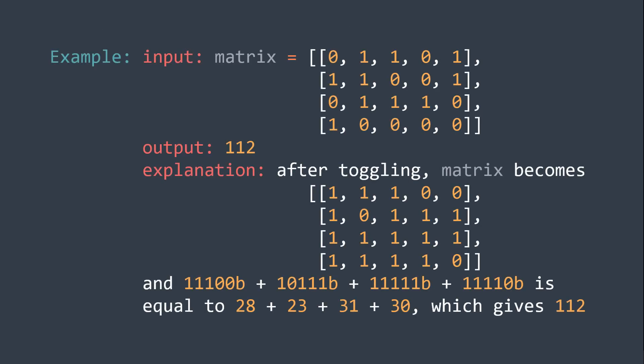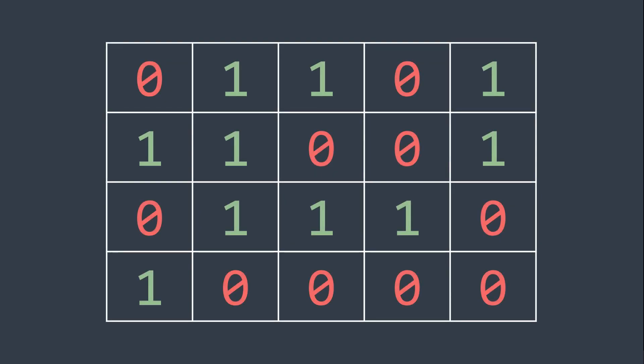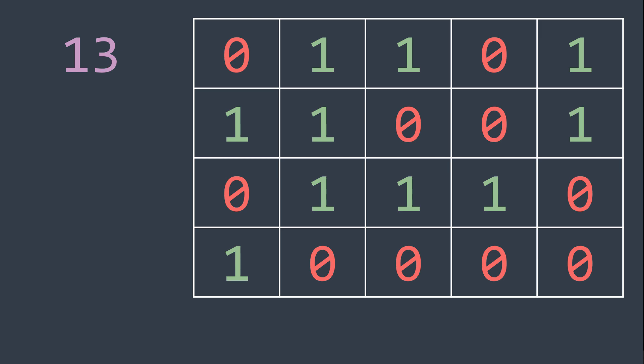And here is an example. You can pause the video if you want to try solving it. Now let's start. In this problem, we want to get the maximum sum of our binary numbers. For example, in this matrix, we have the first row is equal to 13, the second row is equal to 25, third row is equal to 14, and the last row is equal to 16, so the sum is 68.